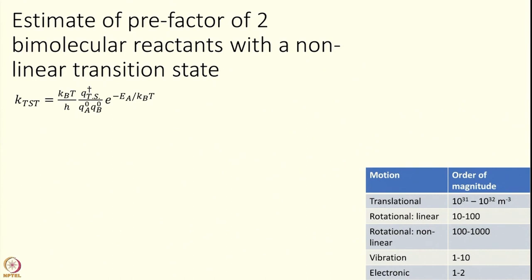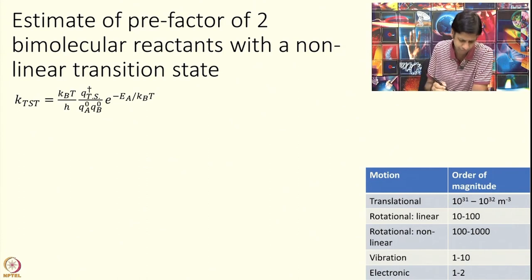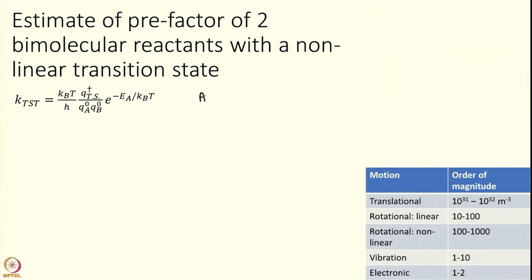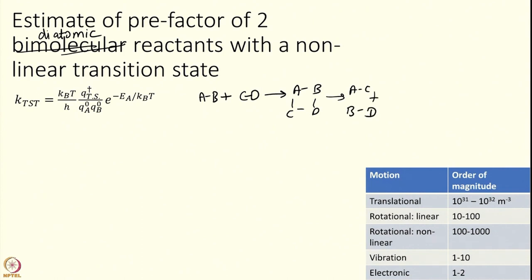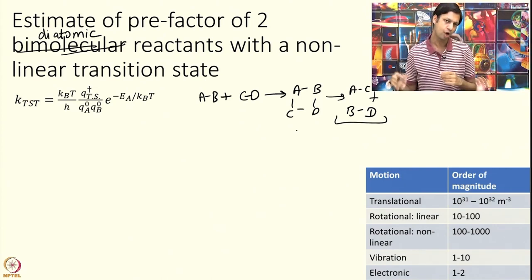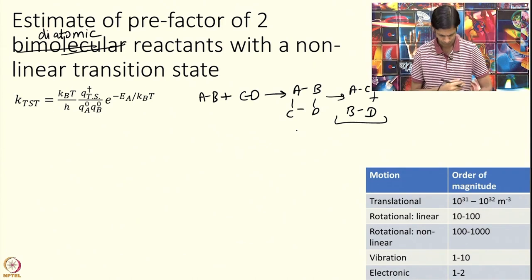Today I will not compute exact numbers but just make estimates; the next module is dedicated to an exact example where we actually calculate numbers. For now, imagine a bimolecular reaction: two diatomic reactants AB + CD, where the transition state looks like a four-atom complex, going to products AC + BD. I want a ballpark estimate of what the transition state rate constant will be.